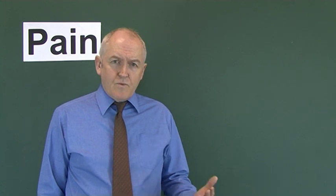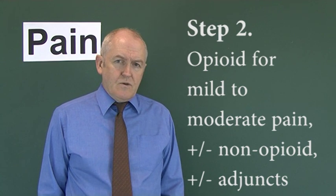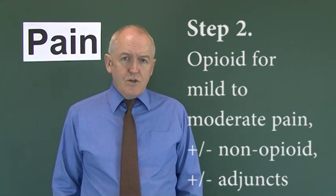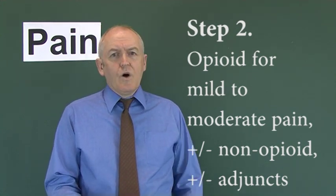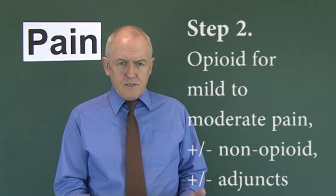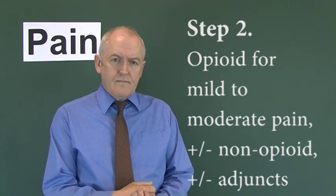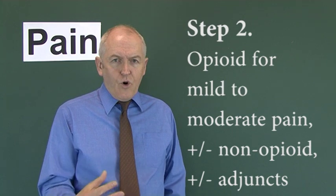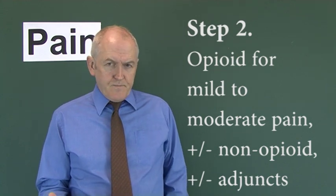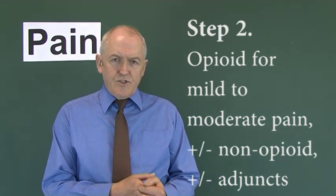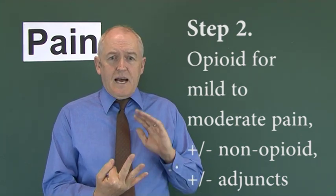As time goes by, or if that doesn't work, we move on to step two of the WHO analgesic ladder. Step two means giving an opioid for mild to moderate pain — what you might call milder opioids, such as codeine or tramadol. You can give these with or without a non-opioid analgesic. Basically, we can think of analgesics as being in three categories: paracetamol, non-steroidals, and opioids.